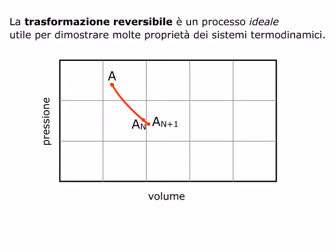Se non vi sono dissipazioni di energia, in particolare se non vi sono attriti, da questo nuovo stato è possibile ritornare allo stato AN semplicemente operando uno scambio di calore opposto, meno delta QN.